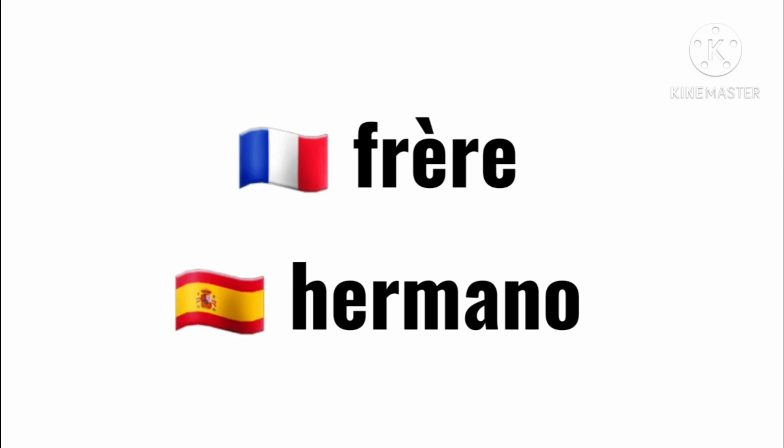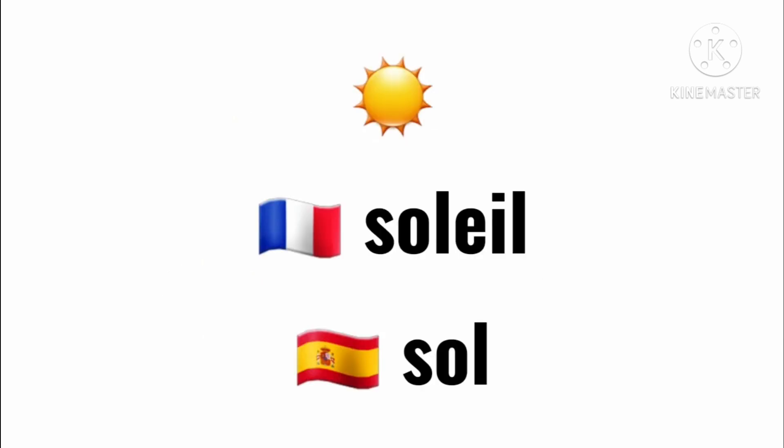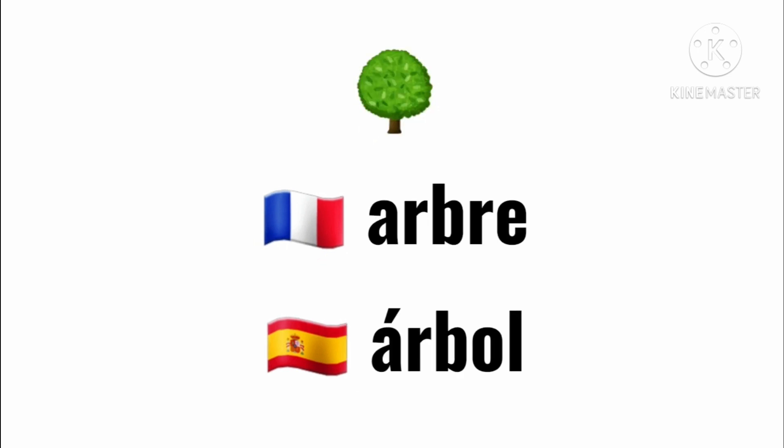The French word for family is 'famille' and in Spanish it's 'familia'. Brother in French is 'frère' and in Spanish it's 'hermano'. The French word for sister is 'sœur'. The Spanish word for sister is like the word for brother — you just change the O to an A, so it's 'hermana'.